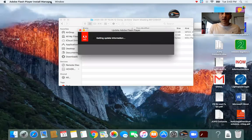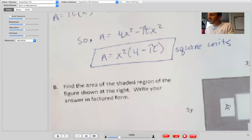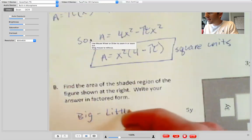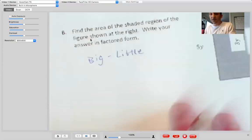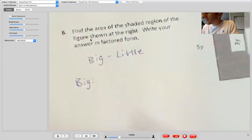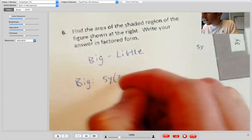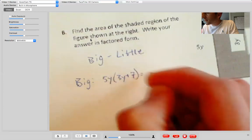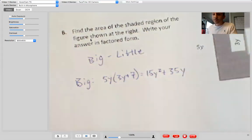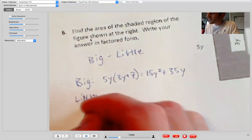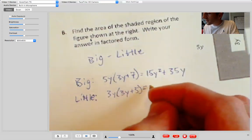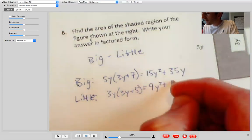So our strategy here is that we're going to do big minus little. That's usually the case on those, on these fun area, the shaded region problems. So big guy is going to be length times width. So that is going to be five Y times the quantity three Y plus seven, which equals 15 Y squared plus 35 Y. And then our little guy is three Y times the quantity three Y plus five, which is going to give us nine Y squared plus 15 Y.